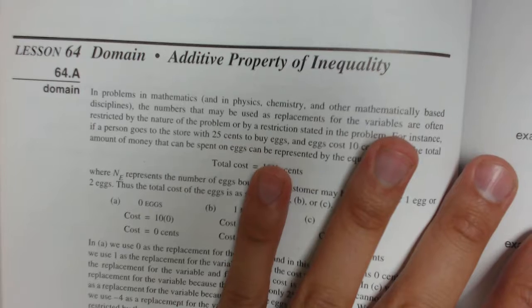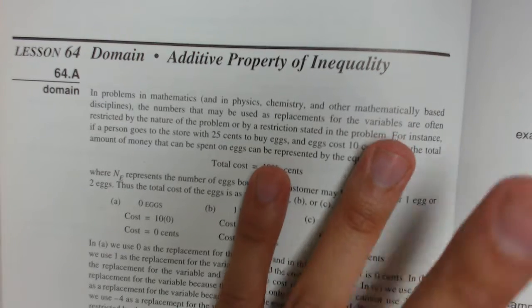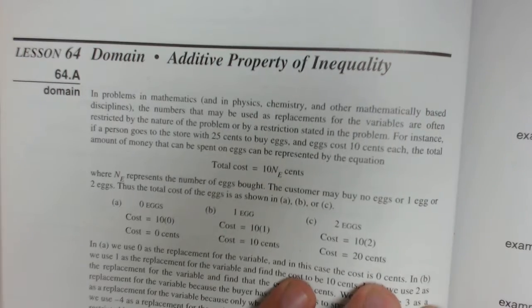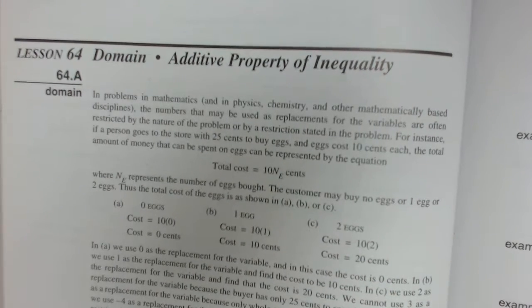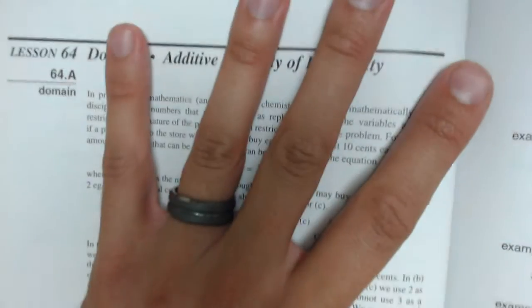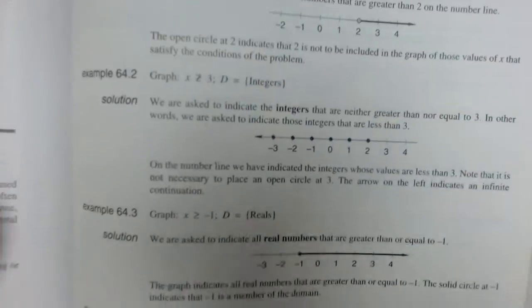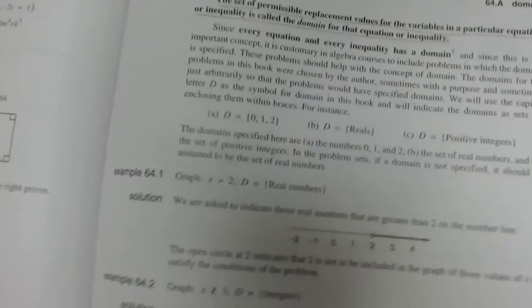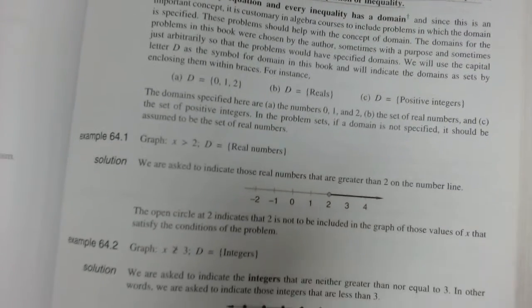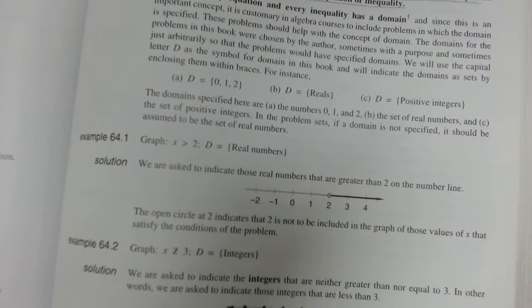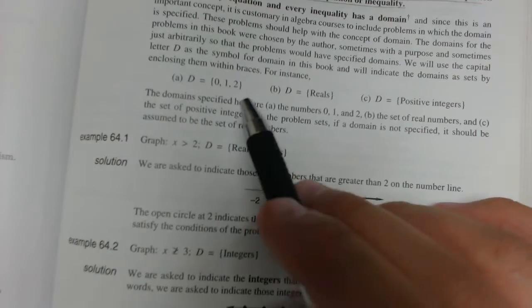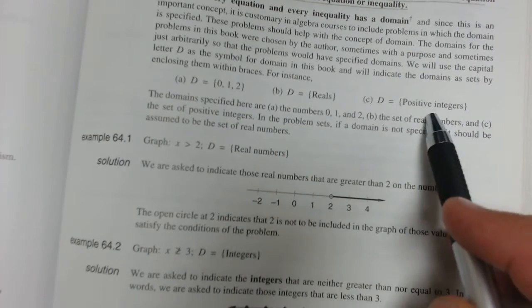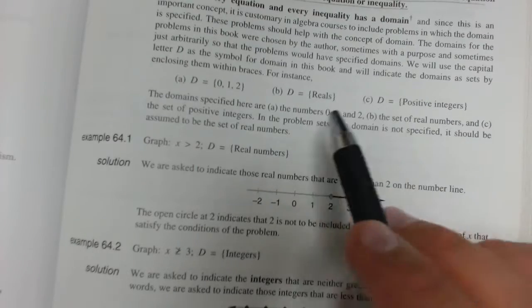So domain, more or less, is like a limit. Or if you think of the word domain, it's like a dome. It pretty much tells you what you can and can't do. Domain is going to be in relation to number sets or inequalities with number sets attached to them. The main domains that we'll see are ones like this. They'll either give you specific numbers or they'll give you a group of the real number groups that we've been learning.